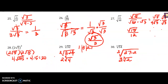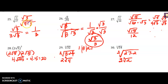On the home stretch! For number 25, I simplified my denominator: the square root of 27 is the same as 9 times 3, and the square root of 9 is 3. Notice again I cancel the square root of 3 over the square root of 3. Remember, I need to keep a 1 in my numerator as a placeholder, so my answer is 1 over 3.